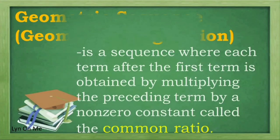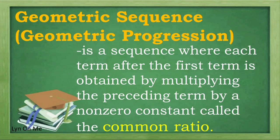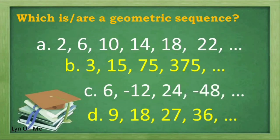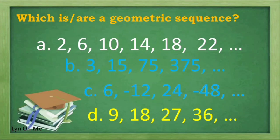When we say geometric sequence or geometric progression, it is a sequence where each term after the first term is obtained by multiplying the preceding term by a non-zero constant called the common ratio. So which of the following is or are a geometric sequence? Those are B and C, because they have a common ratio.